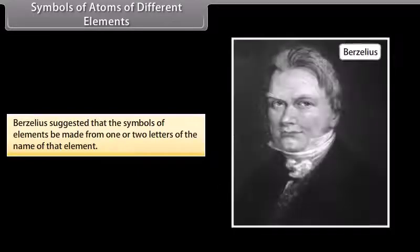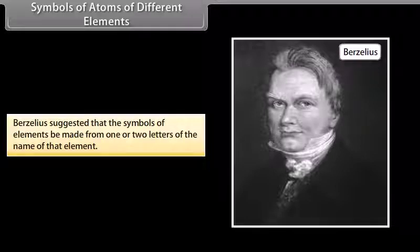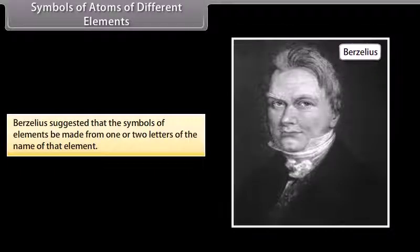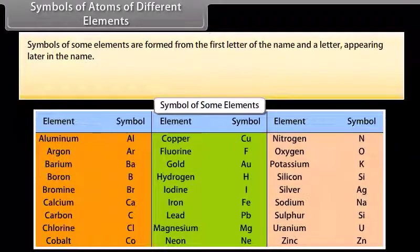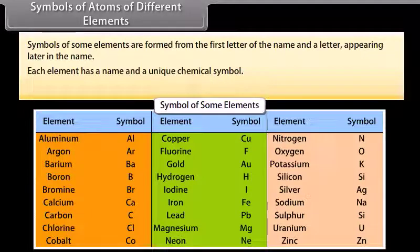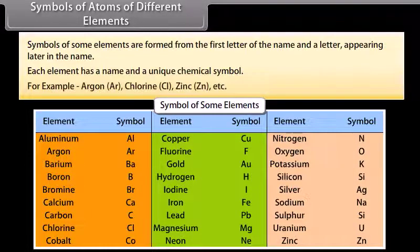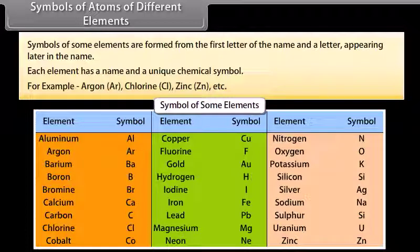Berzelius suggested that the symbols of elements be made from one or two letters of the name of that element. Symbols of some elements are formed from the first letter of the name and the letter appearing later in the name. Each element has a name and a unique chemical symbol. For example, Argon AR, Chlorine CL, Zinc ZN, etc.